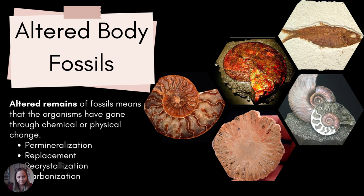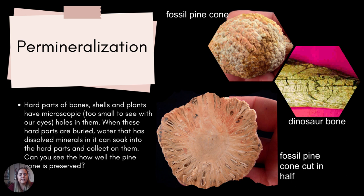Now we're looking at altered body fossils. This comes when there's a chemical change or physical change to the specimen, and a lot of times some of the specimen material isn't really left over — it's not really bone anymore, but something else. This can come in the form of permineralization, replacement, recrystallization, and carbonization.